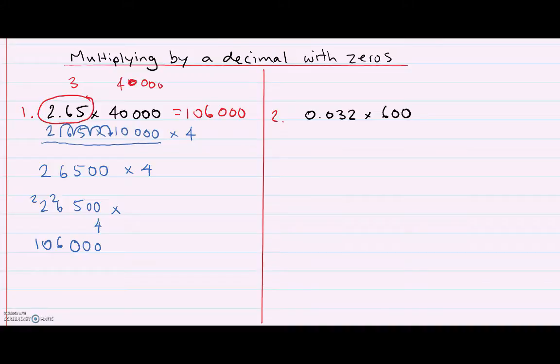Let's take a look at the next question. So in this next question, I have a very small number, 0.032, and I'm multiplying by 600.